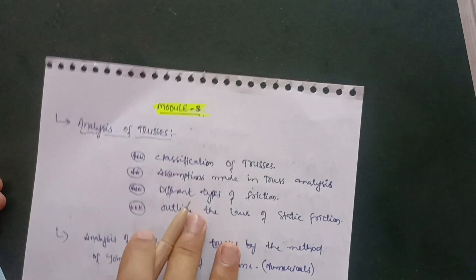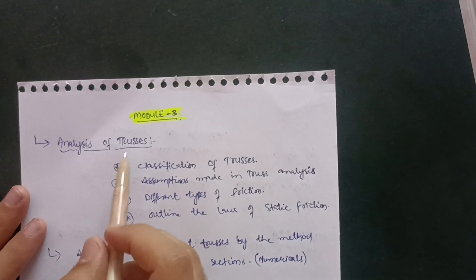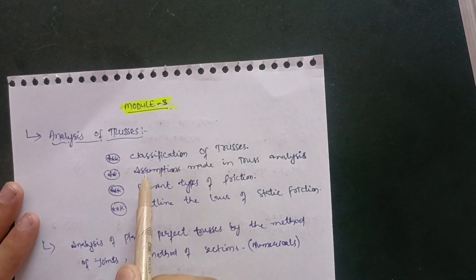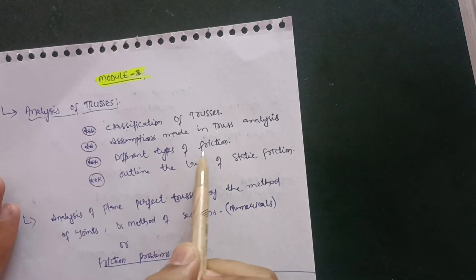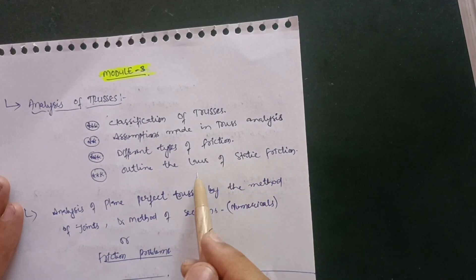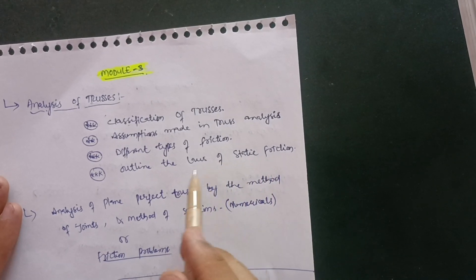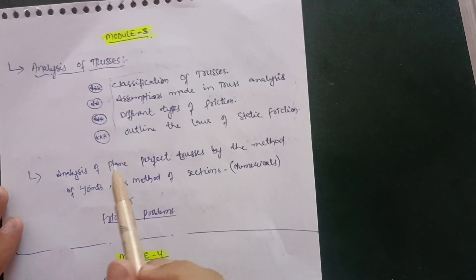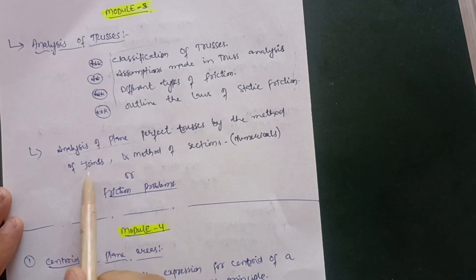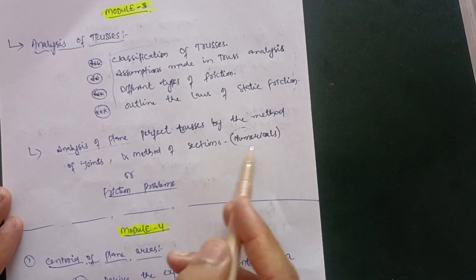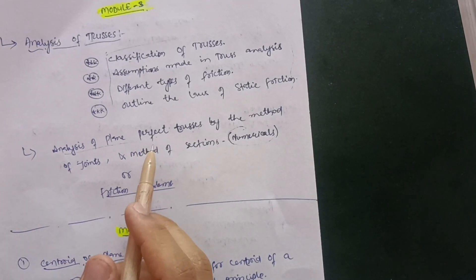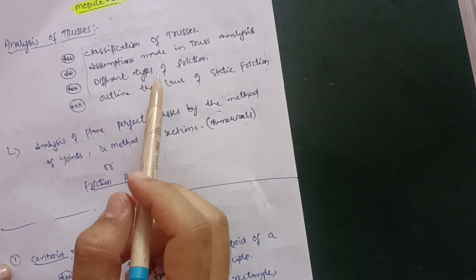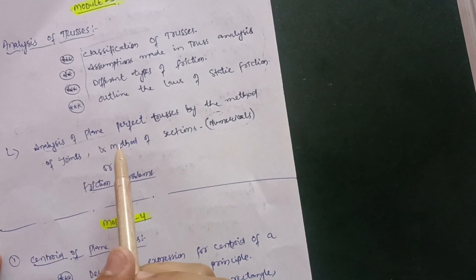Module 3 covers trusses and friction. Theory questions include: classification of trusses, assumptions made in truss analysis, different types of friction, and the laws of static friction (or laws of dry friction). For numericals, focus on analysis of plane perfect trusses by the method of joints and method of sections. If you are comfortable with trusses go through truss problems; if comfortable with friction go through friction problems.